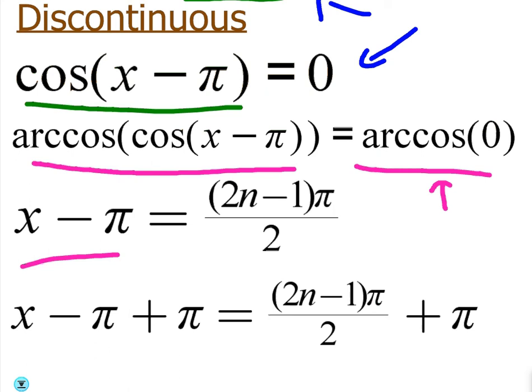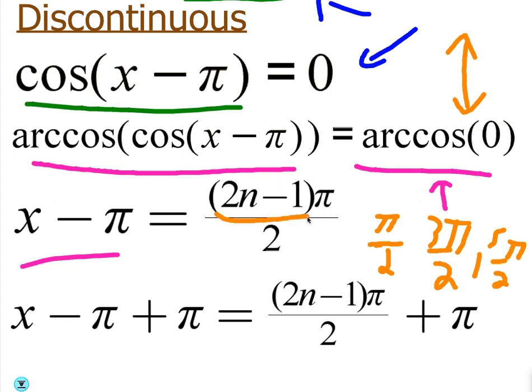And if you recall, it's on the y-axis of the unit circle. So that would be at pi over 2, 3 pi over 2, 5 pi over 2, basically any odd number pi over 2, which we can write as 2n minus 1 times pi over 2, because 2n minus 1 is an odd number.